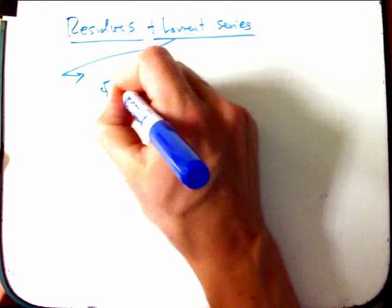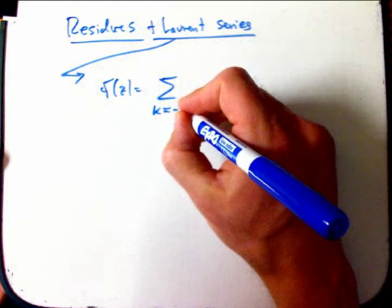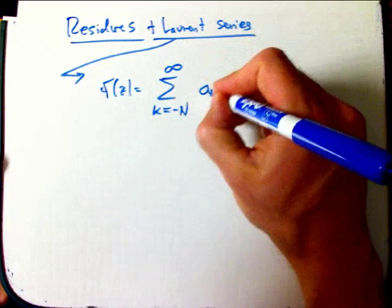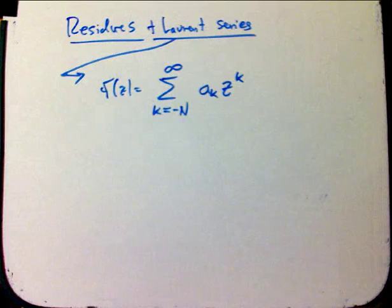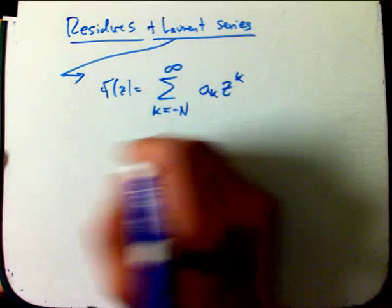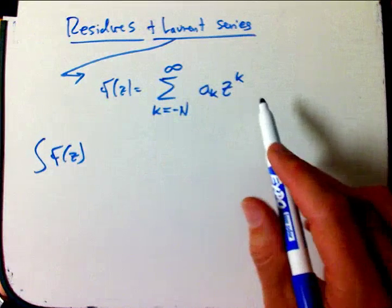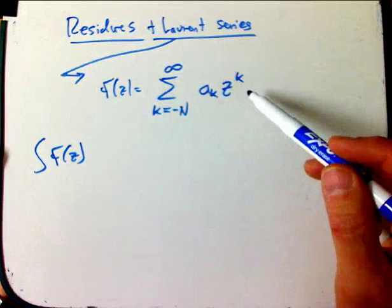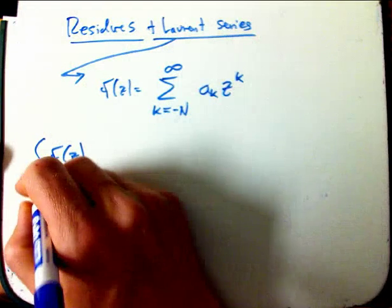That's where f(z) is given by a power series, but I allow a finite number of negative terms. Turns out to get pretty dicey if you try to go infinite in both directions. Then what we can say is that the integral of any such function is getting fairly general. It allows us to have some mild singularities, what are called poles at the origin, and then have all the things we can do with power series as well.